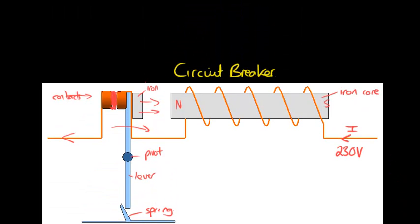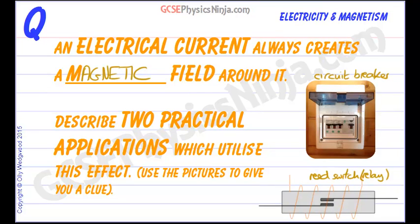So those are two applications, a circuit breaker and a reed switch, which use the electromagnetic effect to good use.